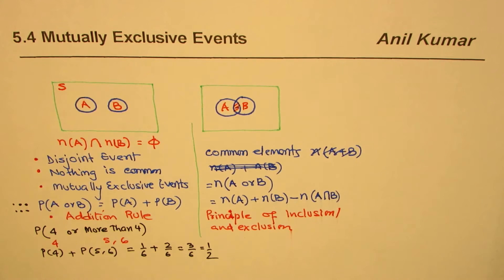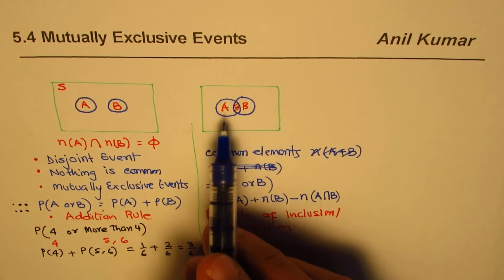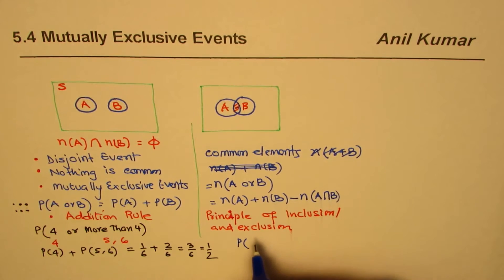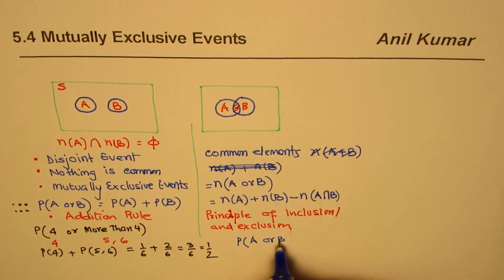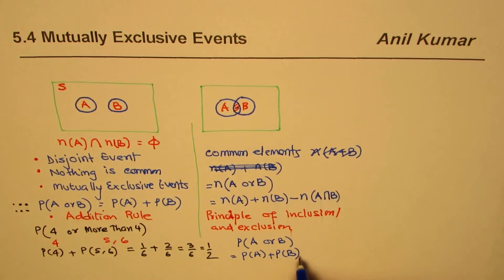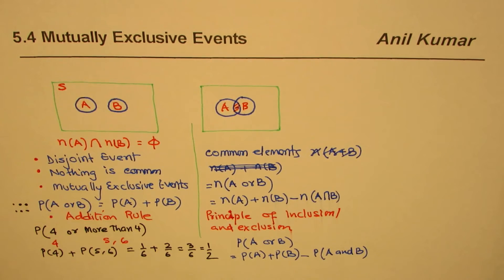When we add all the elements of A with B, we add the common elements twice, and therefore they should be taken away. So the probability of event A or B will be the probability of A plus the probability of B, take away the probability of A intersection B.